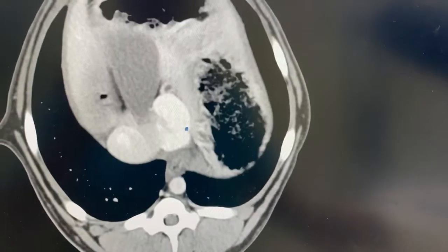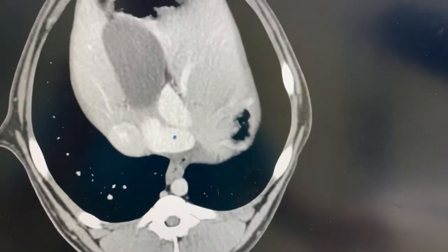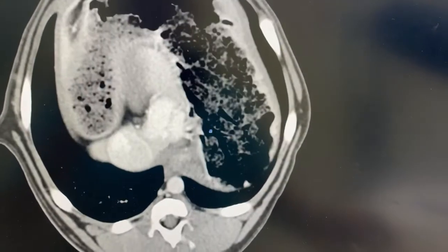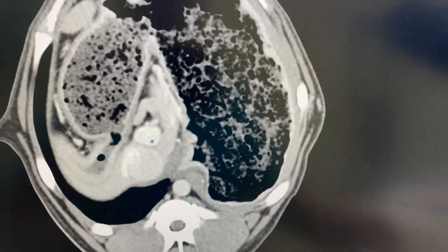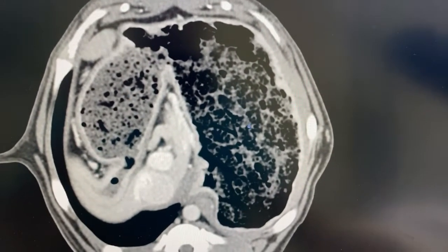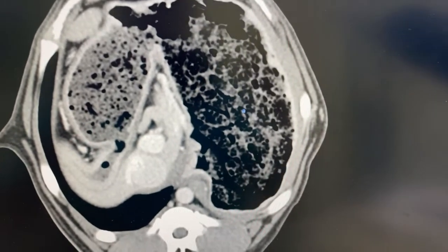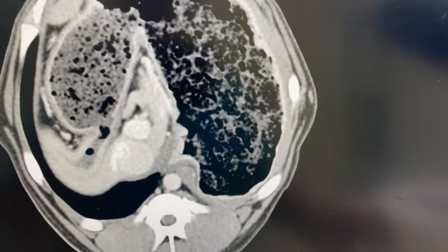That vessel, as you go farther caudal, you can see it looping around here and then joins with the portal vein right there. That's all food in the stomach. It is a Labrador, so you can expect that there's pretty much always going to be food in the stomach.